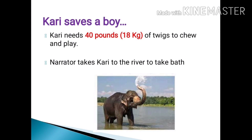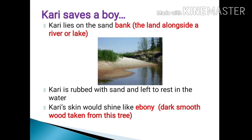Kari usually doesn't eat much but he needs nearly 40 pounds — that is 18 kg — of twigs to chew and play. Every day the narrator takes Kari to the river to bathe. After reaching the river, Kari would lie on the sand bank. The word bank means a piece of land alongside a river or lake. Gopal would take some fresh sand and rub Kari with it to clean him.